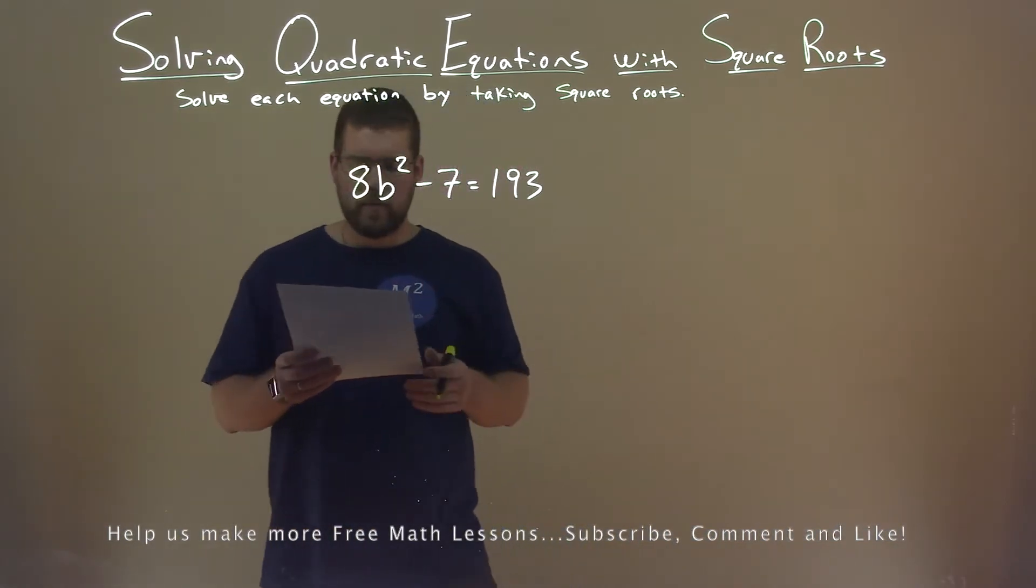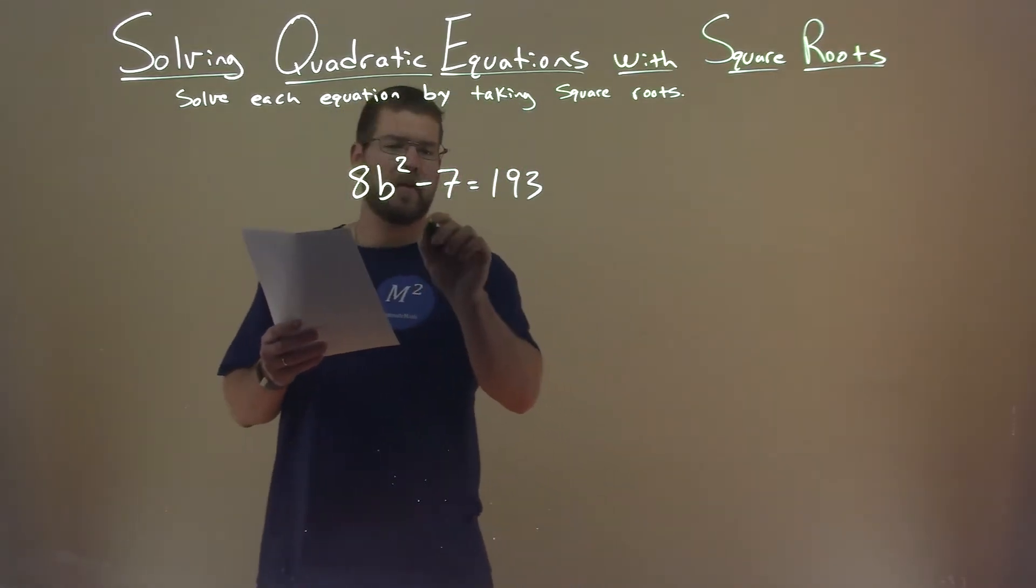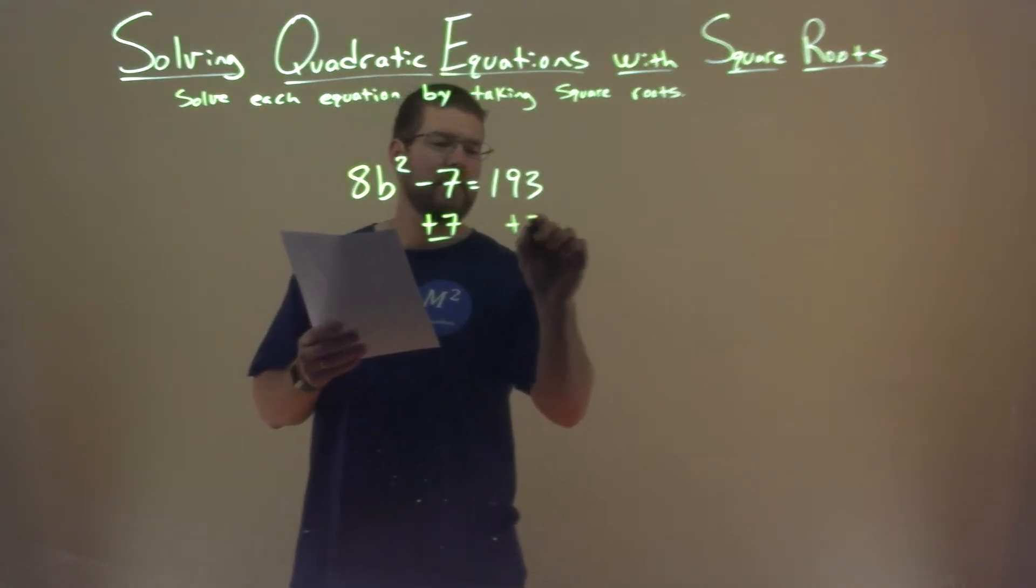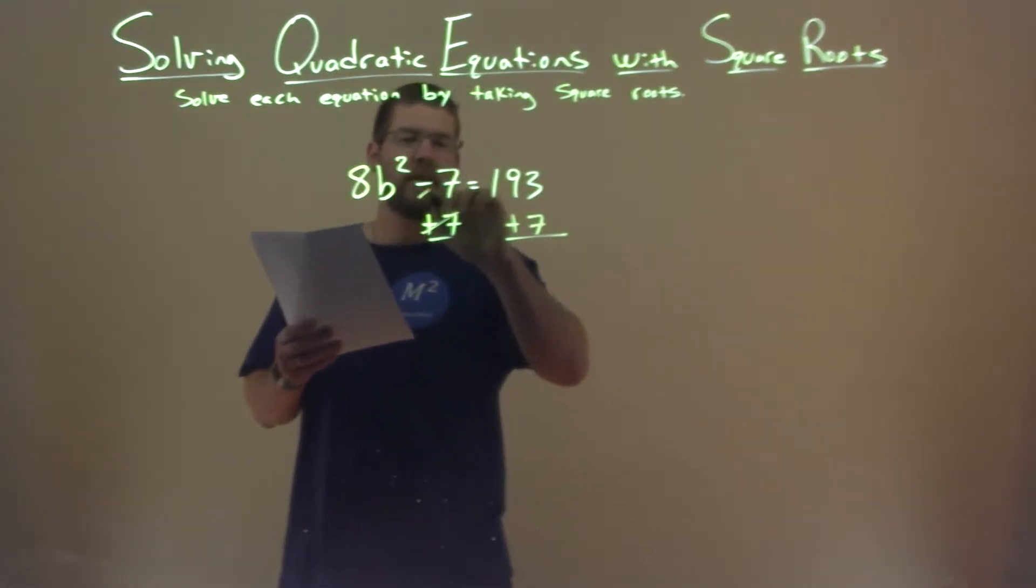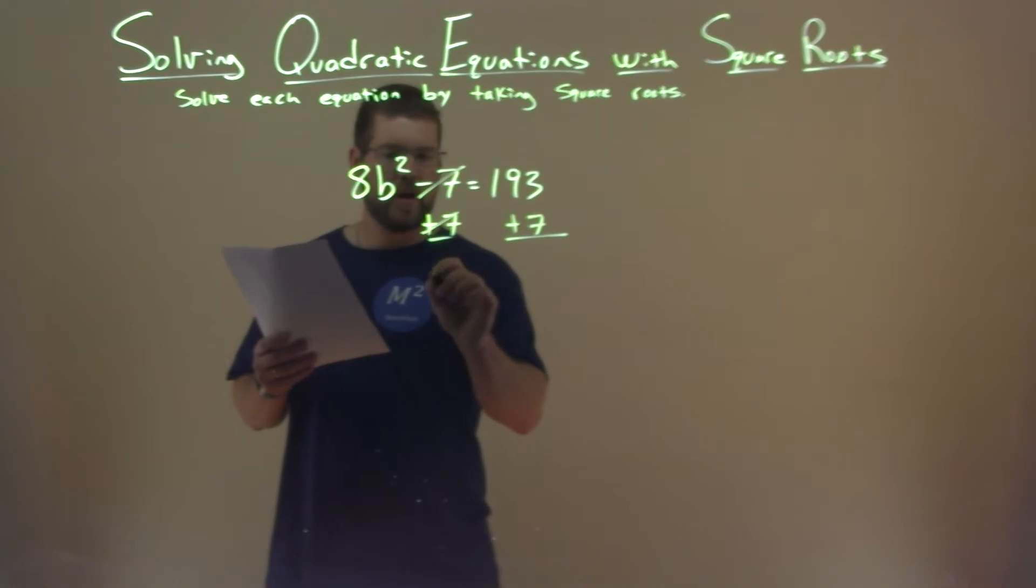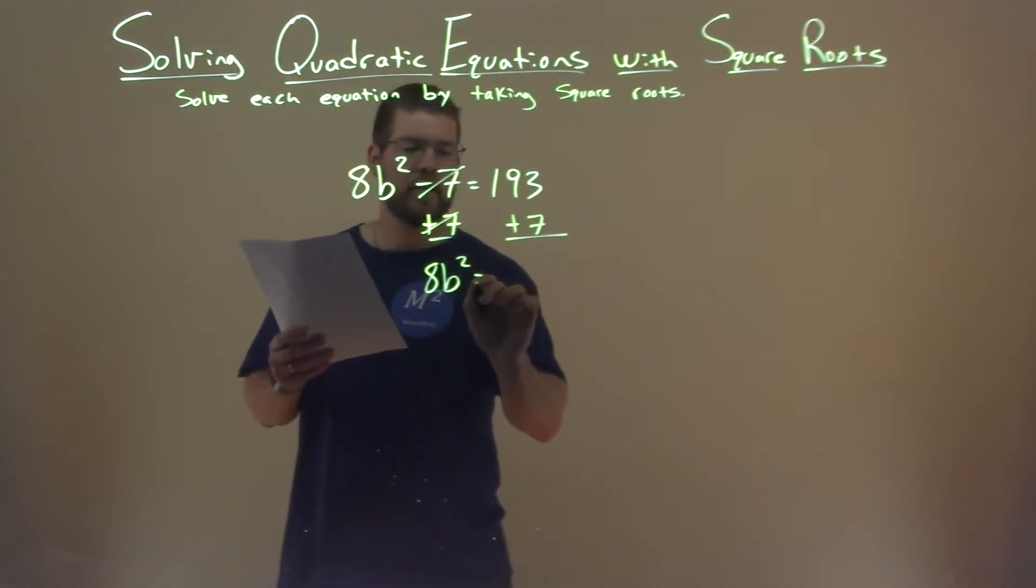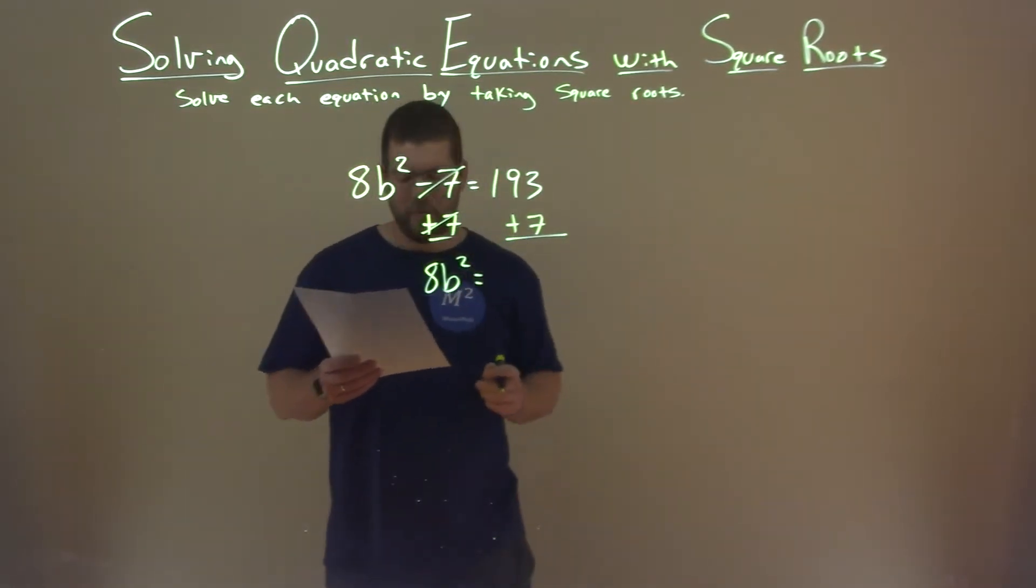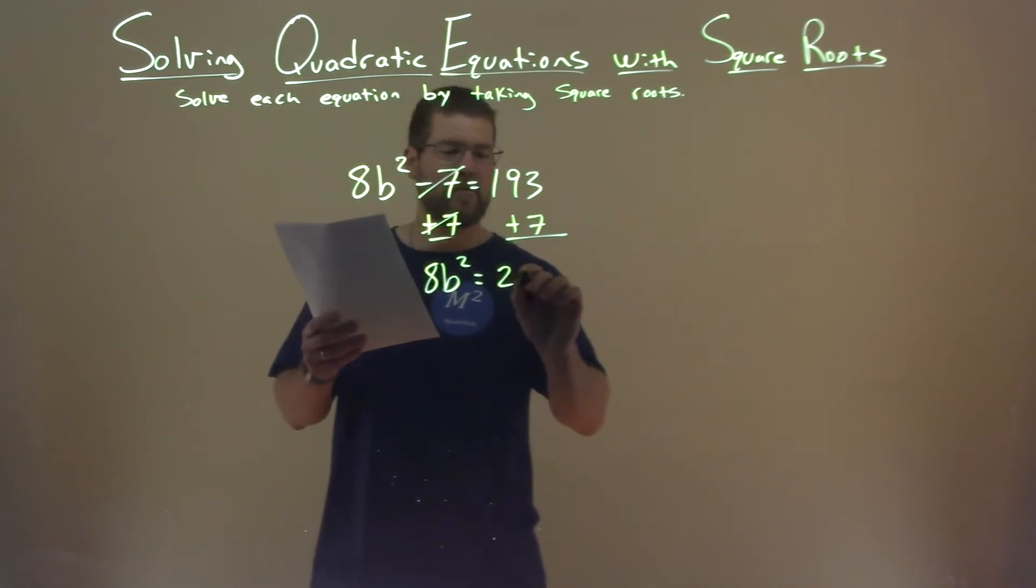I want to get b squared by itself, so the first step in doing that is adding 7 to both sides. These 7s cancel each other out, and we have 8b squared left on the left. 193 plus 7 is 200 here.